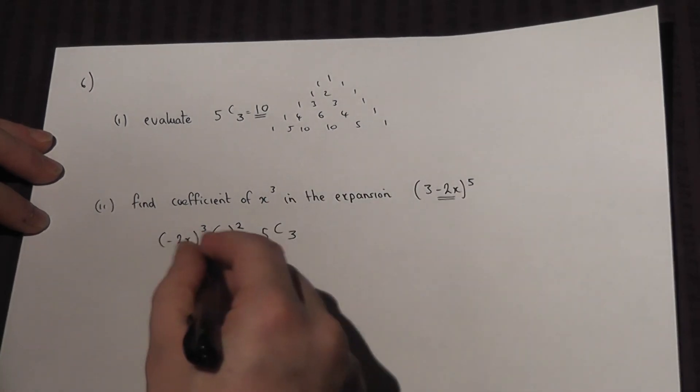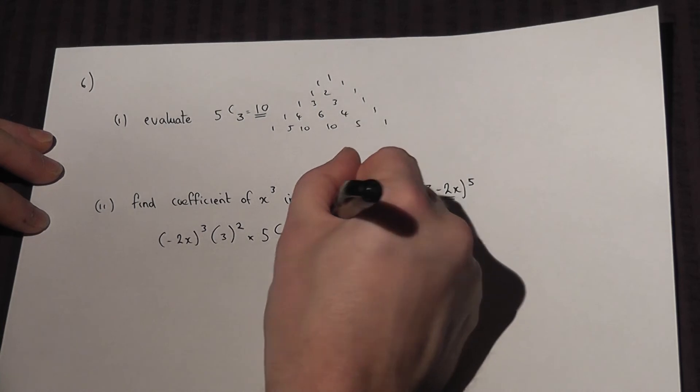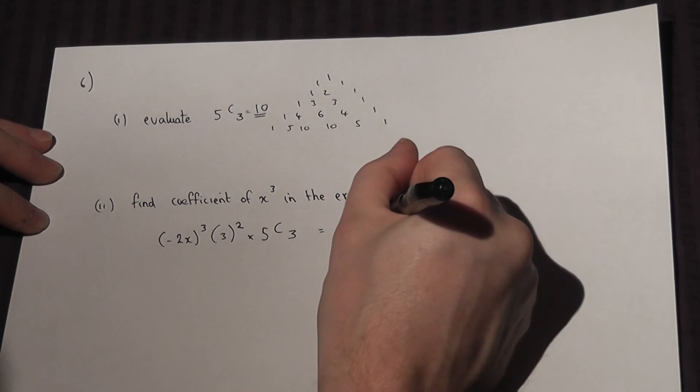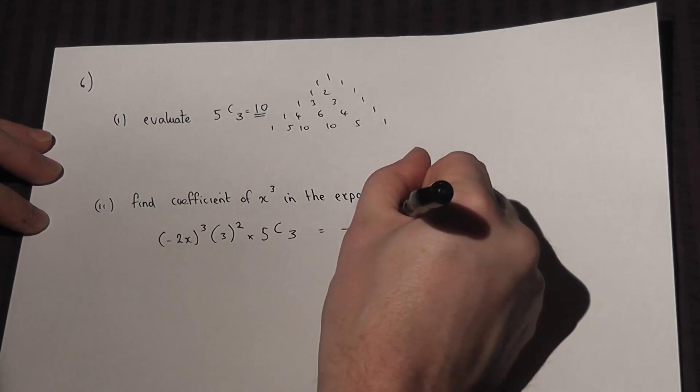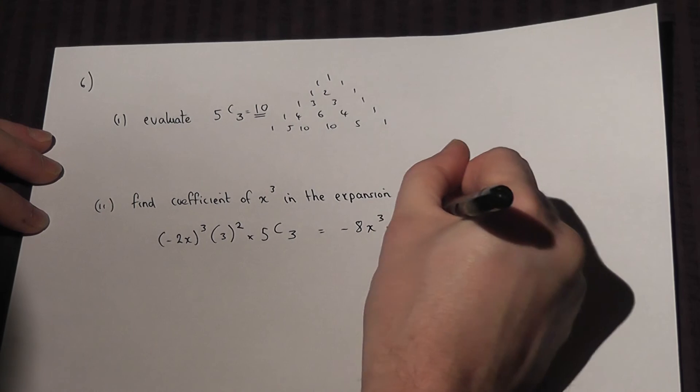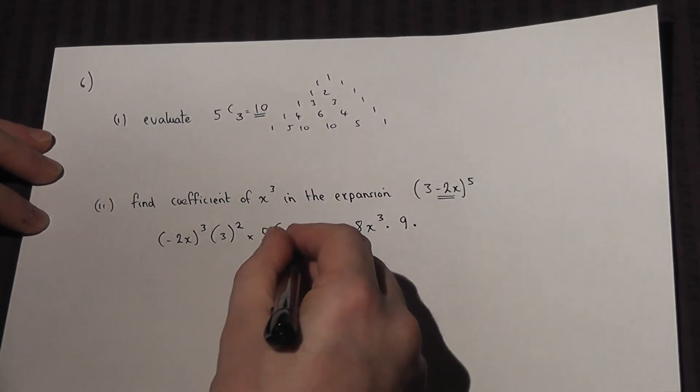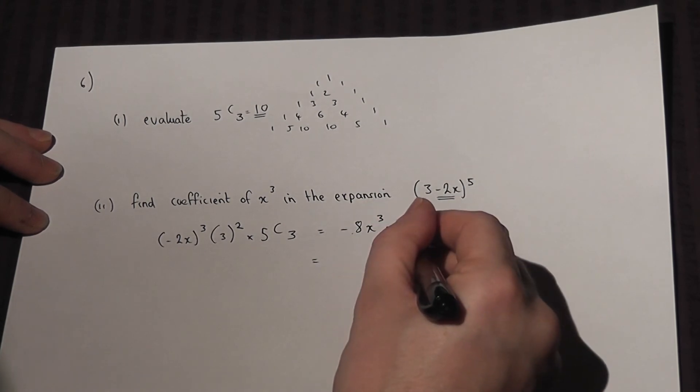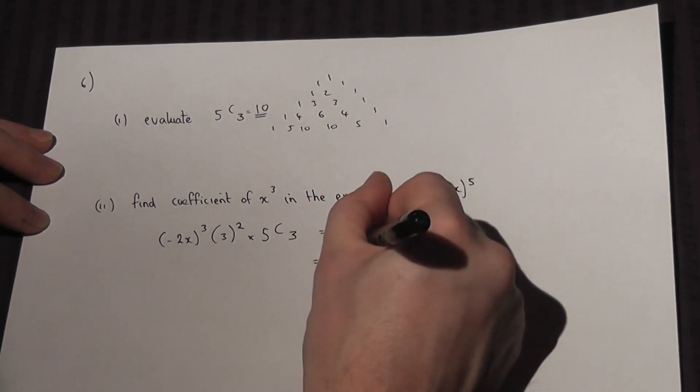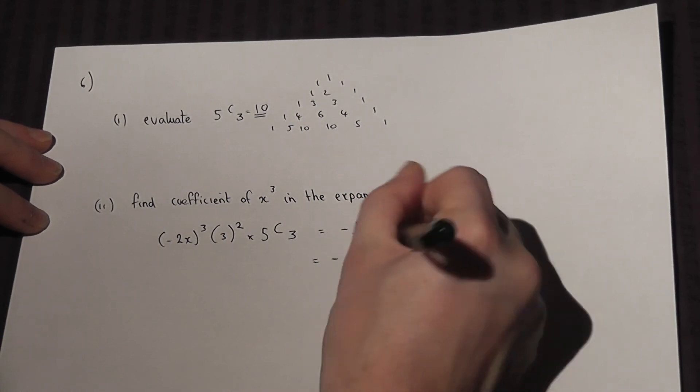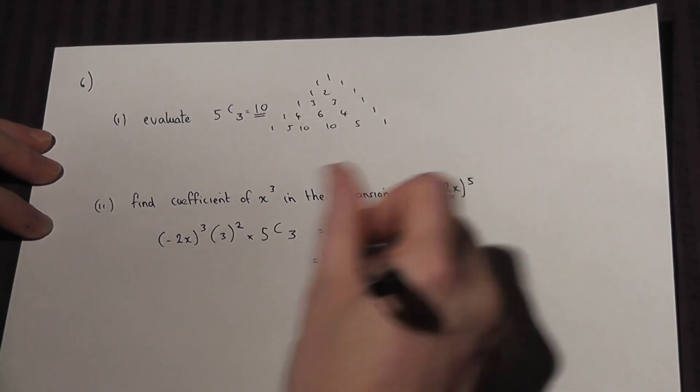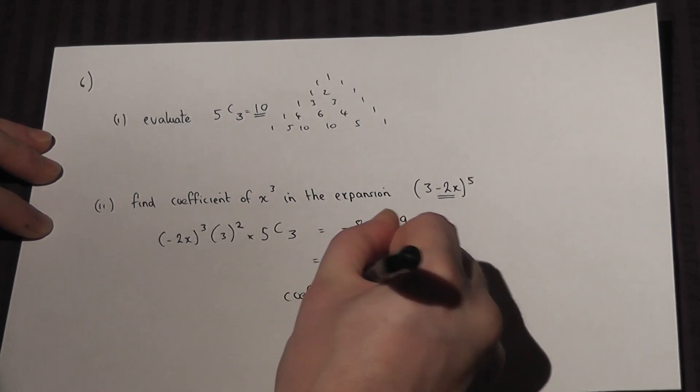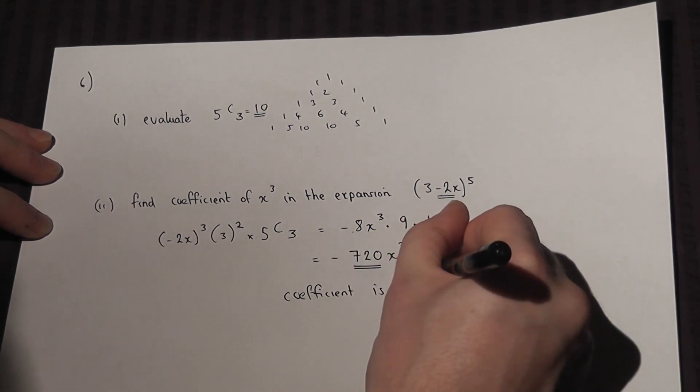That's the general term in the binomial expansion now then. Minus 2 cubed is minus 8, x cubed is just x³, times by 3 squared is 9, and 5C3 is just 10. Now then, minus 8 times 9 is minus 72, times by 10 is minus 720, times by x³. So the coefficient is minus 720.